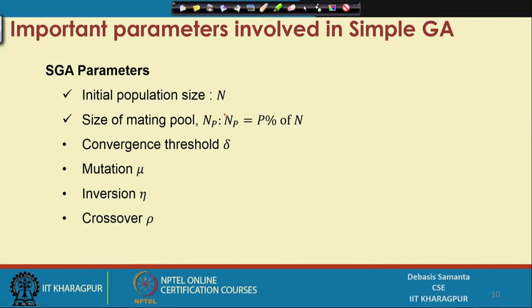As the simple GA parameters: N is the initial size of the population, NP is the size of the mating pool — basically P percent of N, where P is a value decided by the programmer who uses this genetic algorithm to solve their problem.